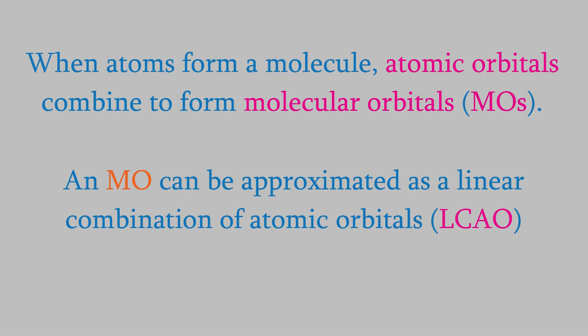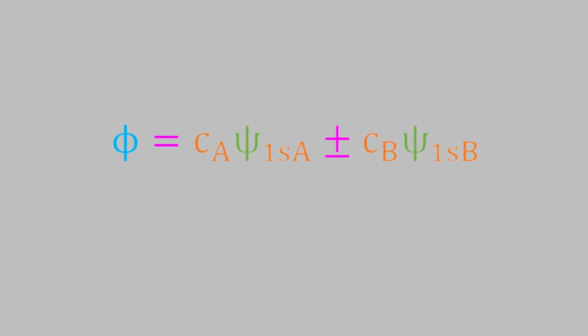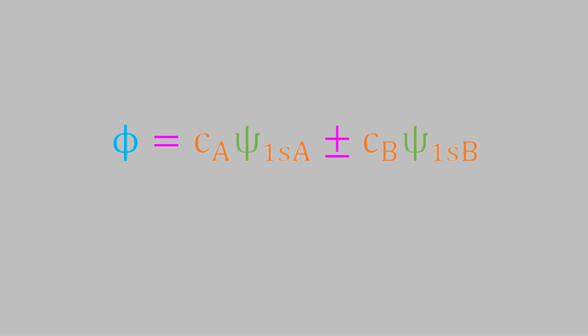In other words, we get the MO by adding or subtracting atomic orbitals representing each of the atoms in the molecule. For example, H2 plus contains one electron. If the atoms were separate and the electron was in the ground state, the electron would be in the 1s orbital of either nucleus A or nucleus B. When we join the two atoms into the H2 plus ion, the 1s orbitals are combined to form a molecular orbital. We combine the orbitals by either adding or subtracting them — forming a linear combination of atomic orbitals, or LCAO. Each is multiplied by a constant CA or CB, because the electron may spend more time on either nucleus A or nucleus B.